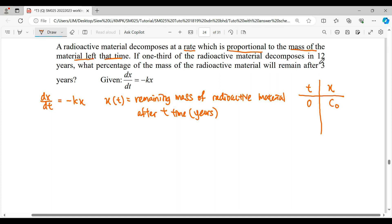So after 12 years, one third of the radioactive decomposes. When one third of it decomposes the remaining, because x here denotes the remaining mass, so one third decomposes, the remaining will be 2 over 3 of initial concentration.